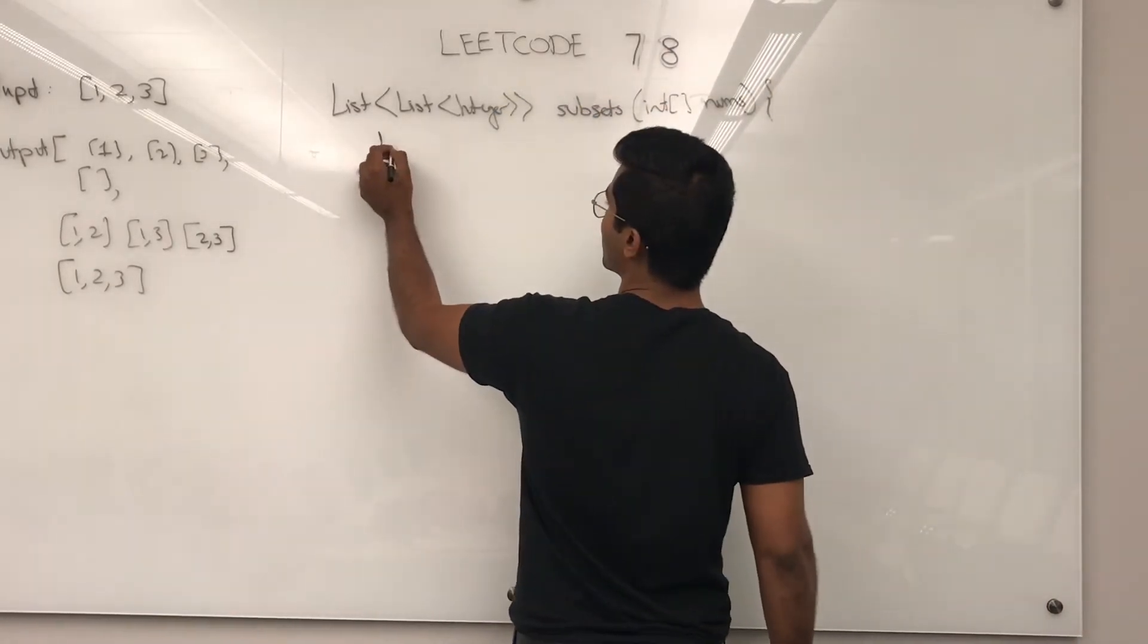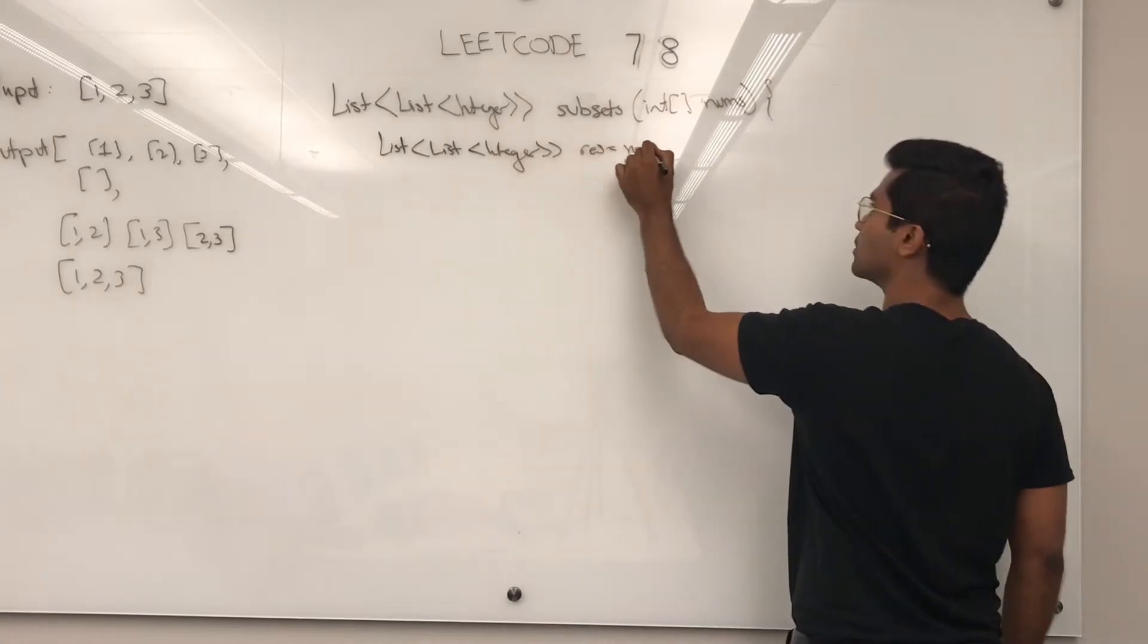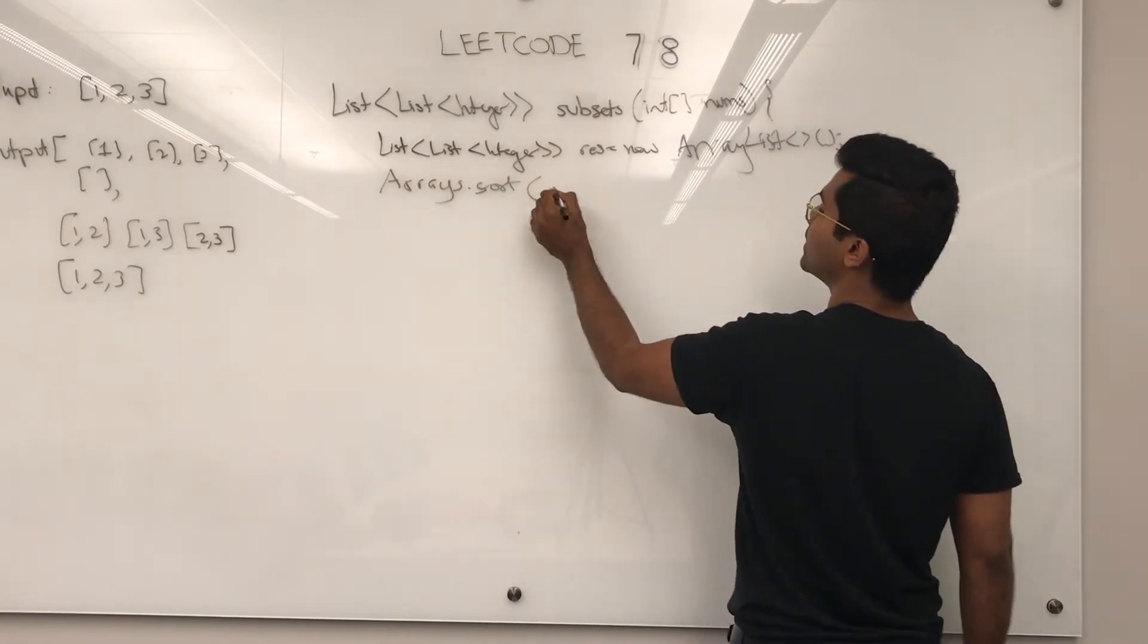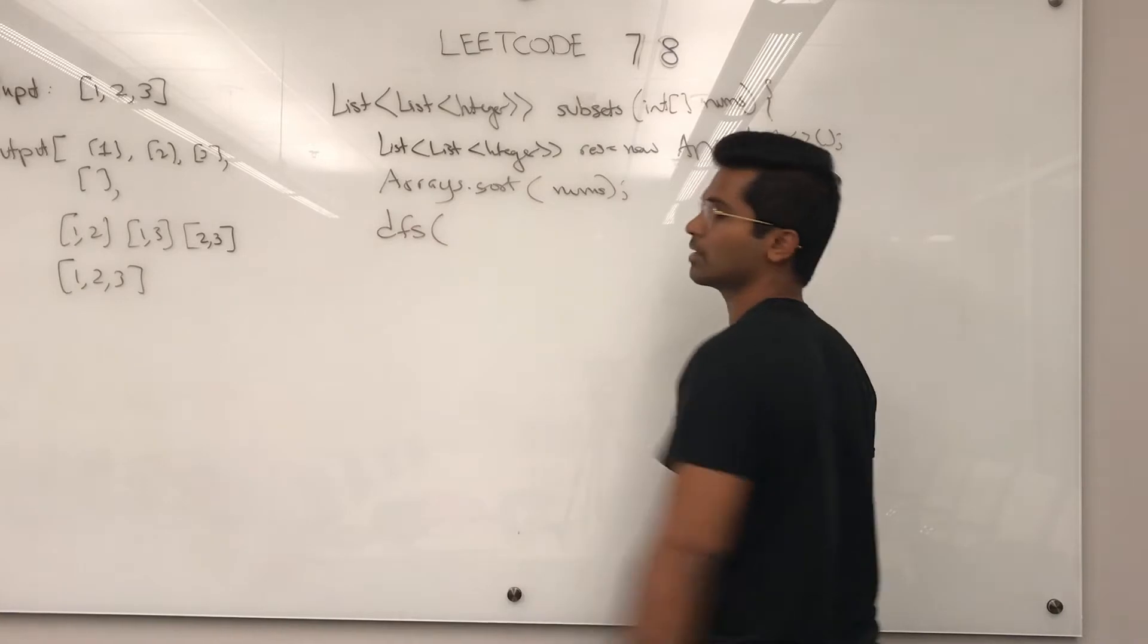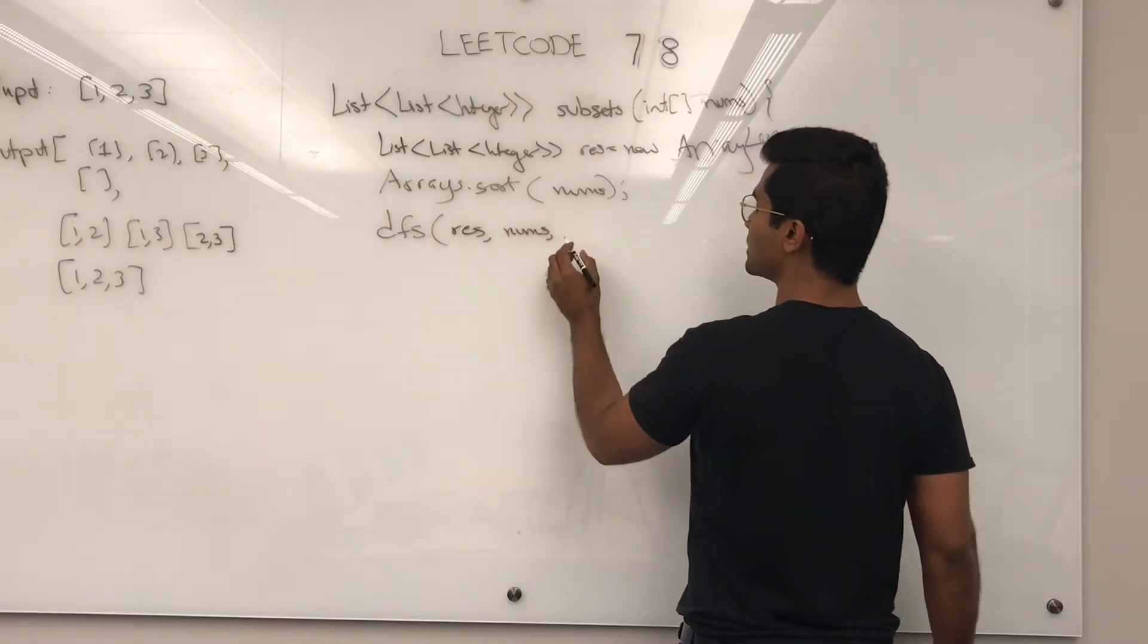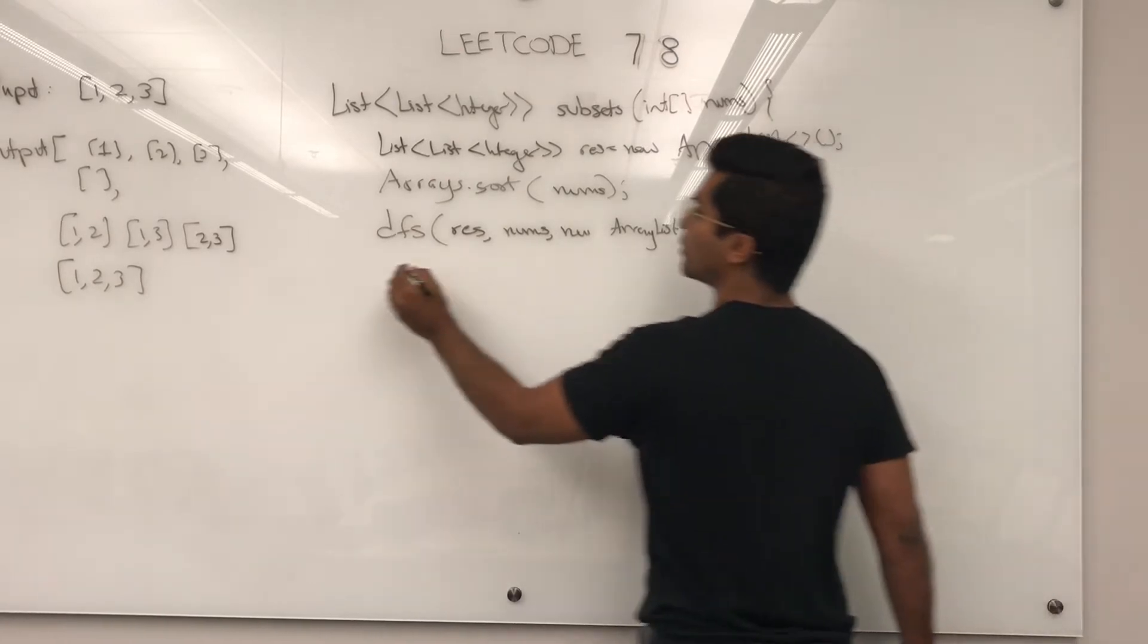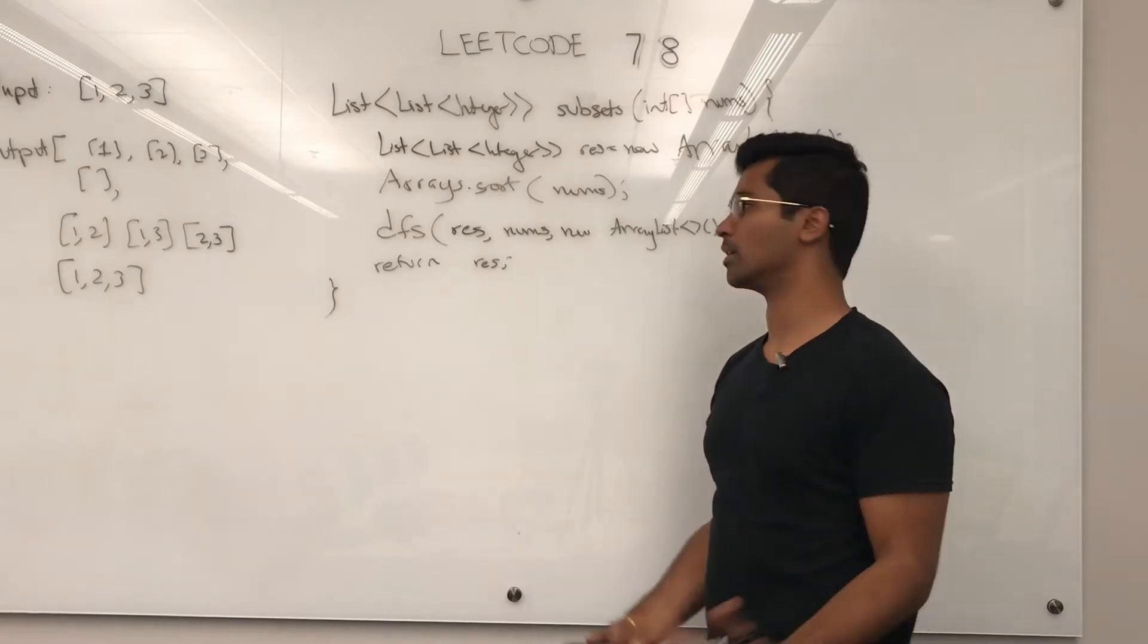So first we need to write the data structure that they want us to return. Then what we do is we sort the array so that our output comes in a nice increasing order. Then I call it DFS because that's how usually I write my recursive functions. So we need to pass in res, we need to pass in nums, we need to pass in a new array list, an empty one, which is going to be what we use for the empty subset, and then we pass in zero which is going to be the start index and we return res.